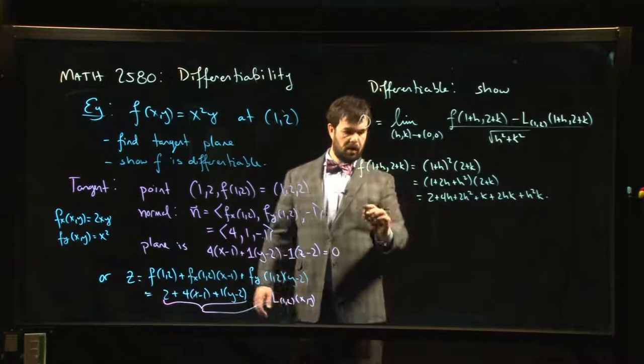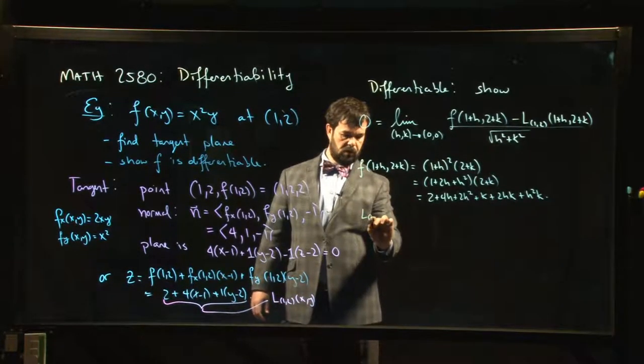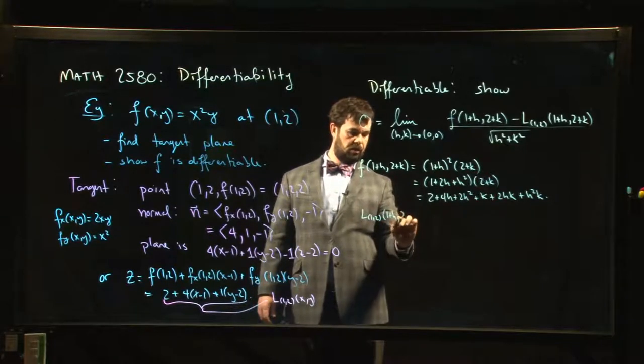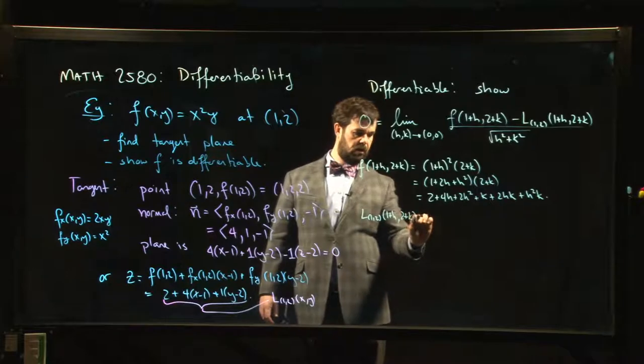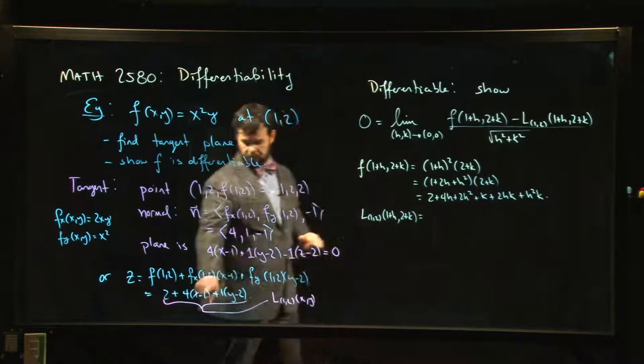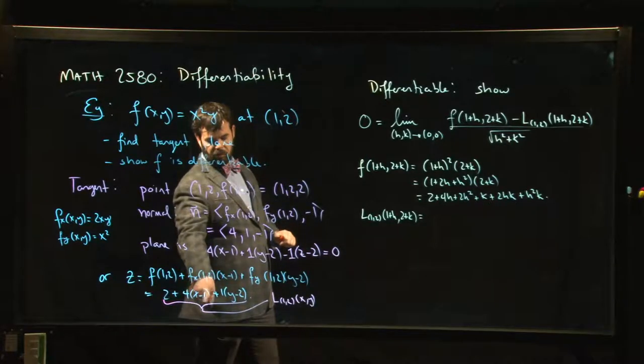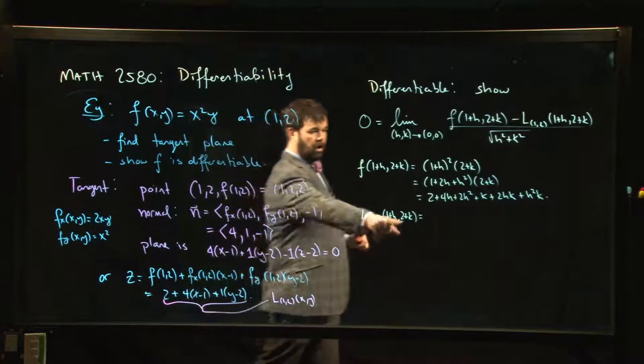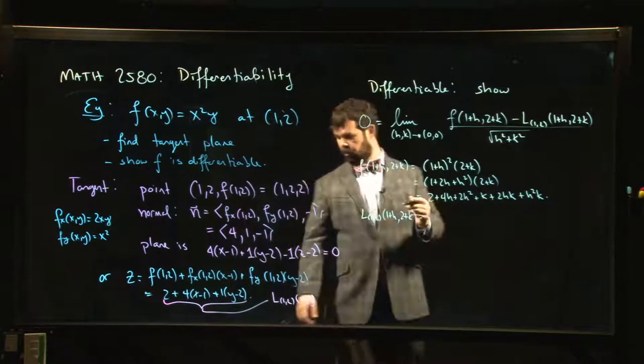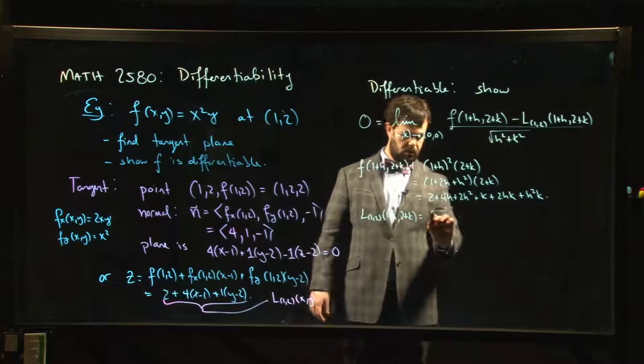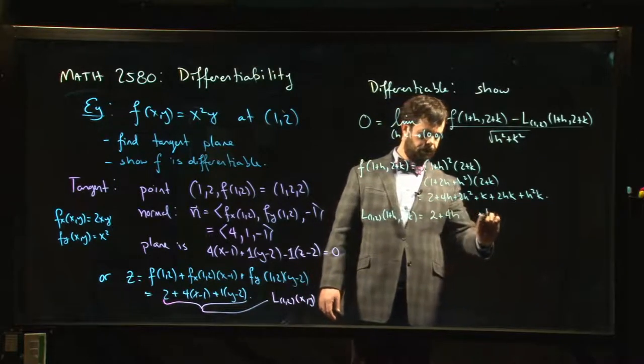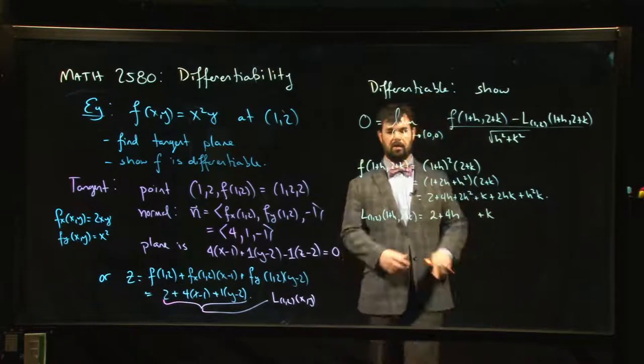What does the linear approximation at (1,2) look like at that same point (1+h, 2+k)? Okay, so I'm just going to take x equals 1 plus h and put it in here, which just leaves me with h. So I'm going to get 2 plus 4h, I'm going to take y equal to 2 plus k and put it in there, which leaves me with just k. So I'm going to get 2 plus 4h plus k.